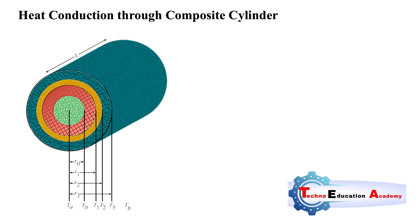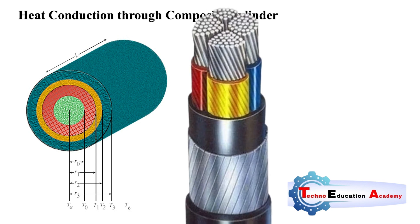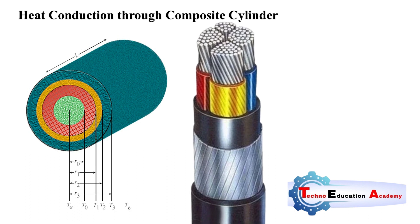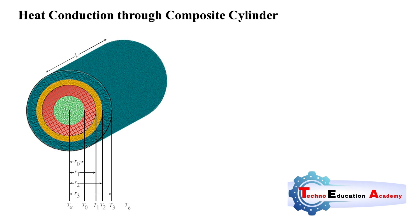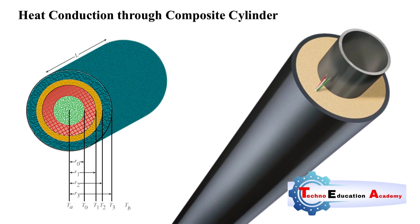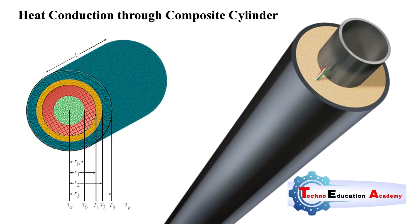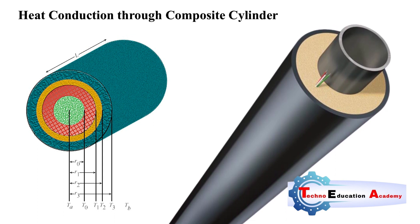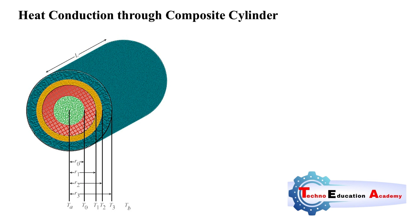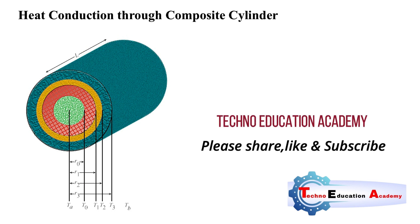The real-life application of a composite cylinder: whenever we transmit electricity through underground cables, you can observe that they are made of a number of layers — that is an example of a composite cylinder. Another example is the steam pipe used in a thermal power plant. Our objective is to prevent heat transfer from the steam to the surroundings, so we use a number of insulators on the steam pipe — that is also an example of a composite cylinder.